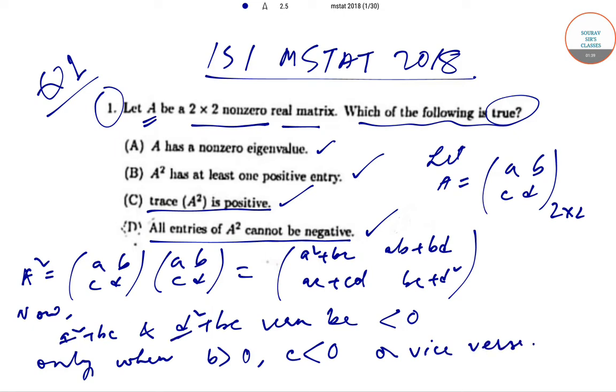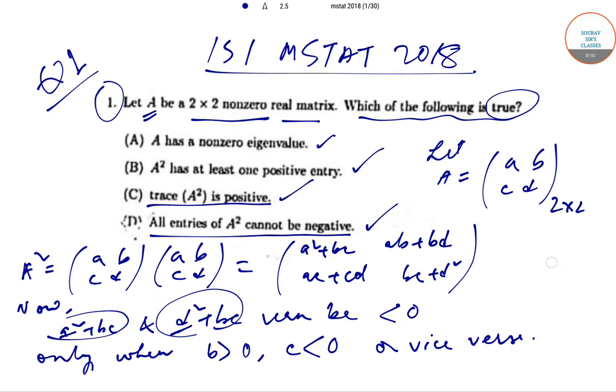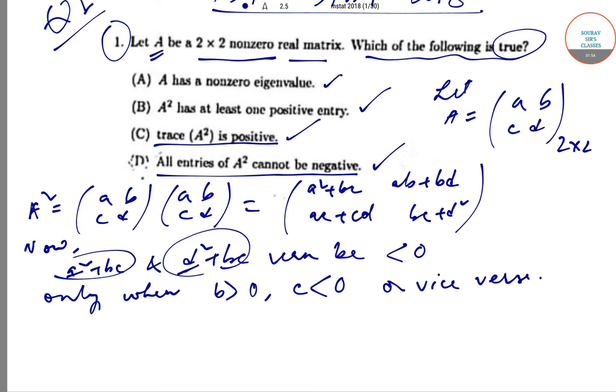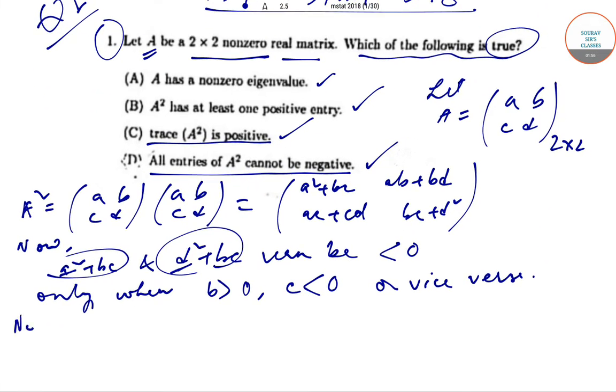a² and d² are positive (they are squares), the entire term can be negative only when bc is negative and the magnitude of bc is greater than a² or d². This is what we have got so far. Also, we have been